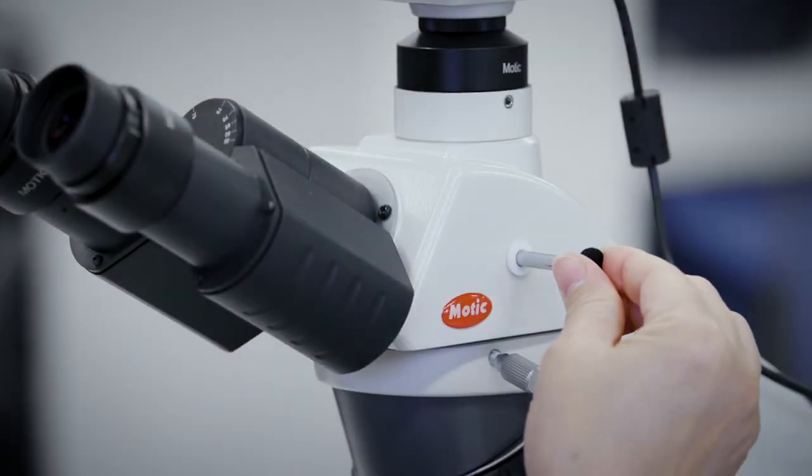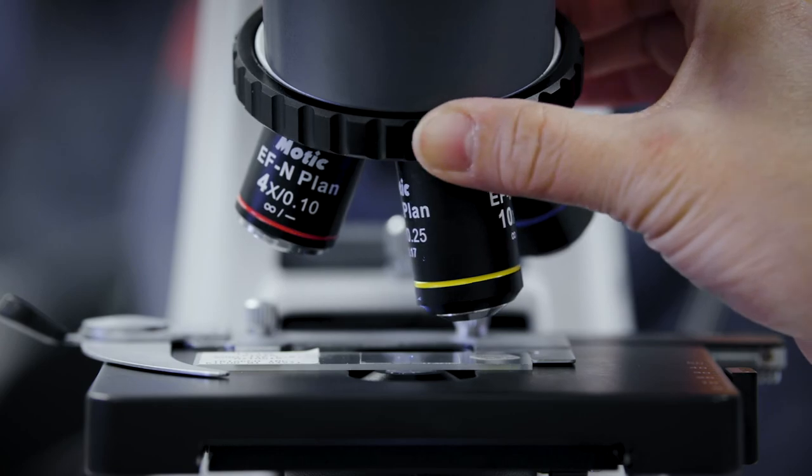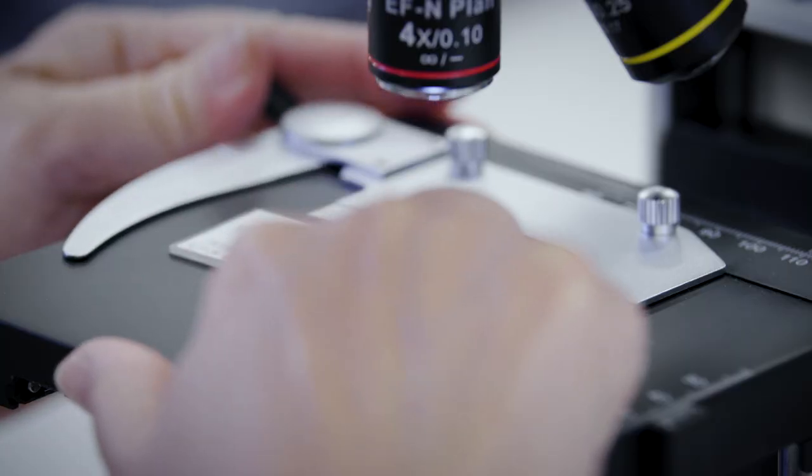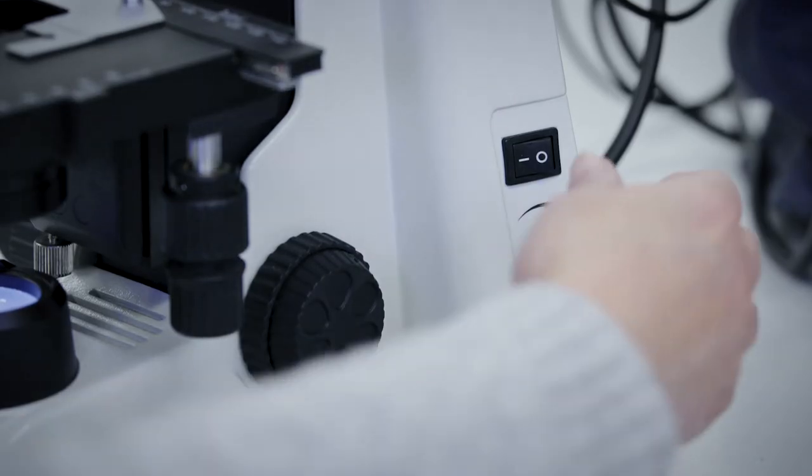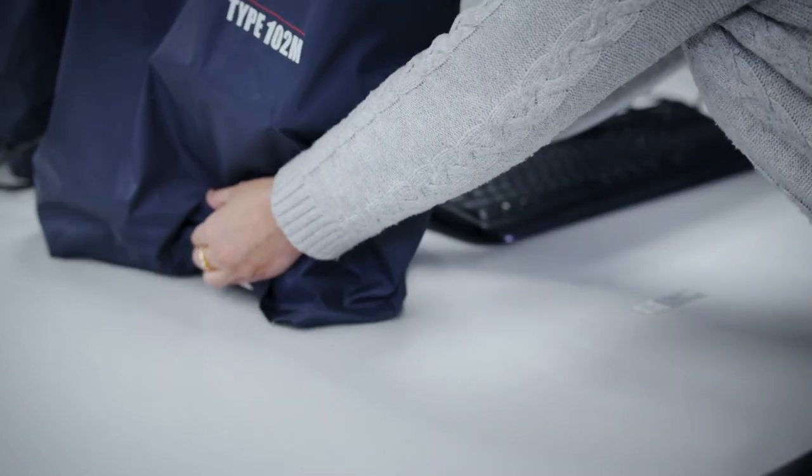When you finish with the microscope, push the camera pin in, set to the lowest magnification, remove the slide, turn the microscope off and put the cover back on. Lift the microscope with both hands and place it back in the middle of the bench.